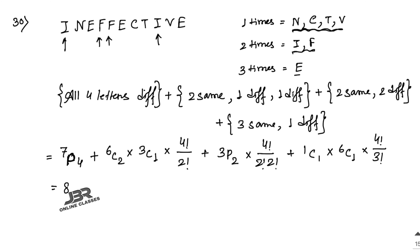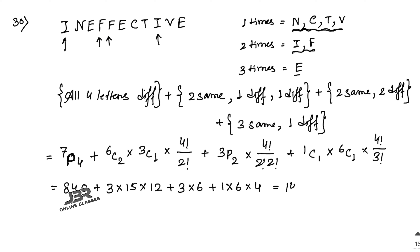Calculating all cases: Case 1 = 840. Case 2 = 3 × 15 × 12 = 540. Case 3 = 3 × 6 = 18. Case 4 = 1 × 6 × 4 = 24. Summing all cases, the final answer is 1422.